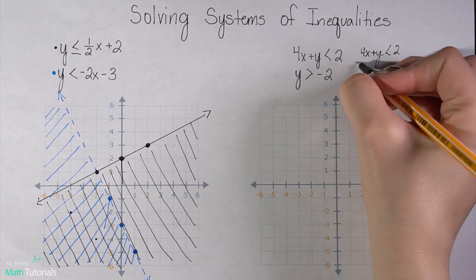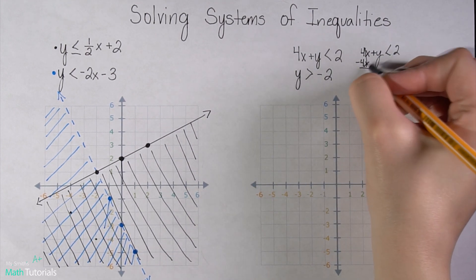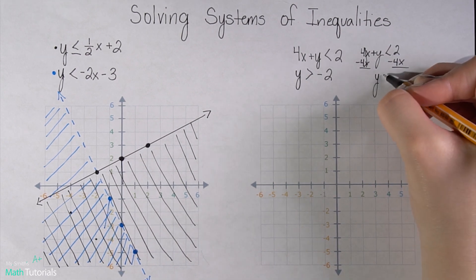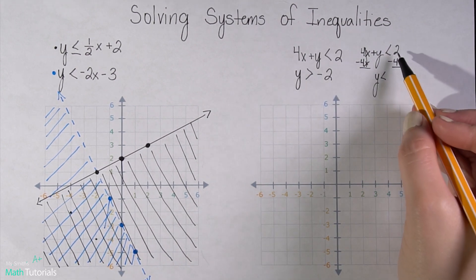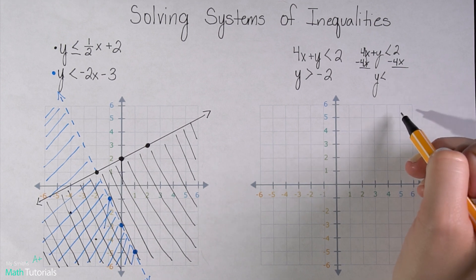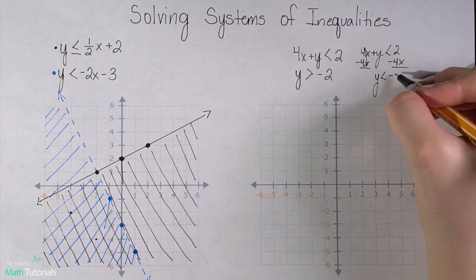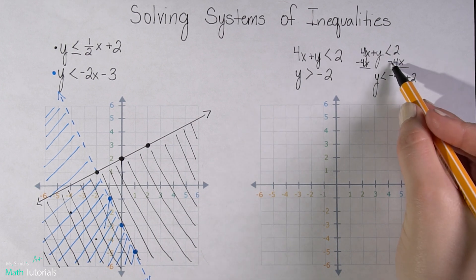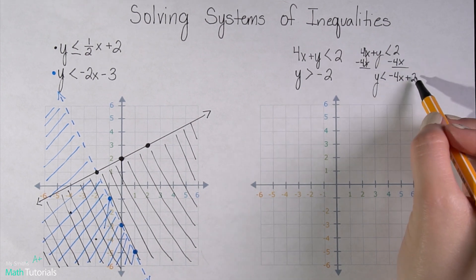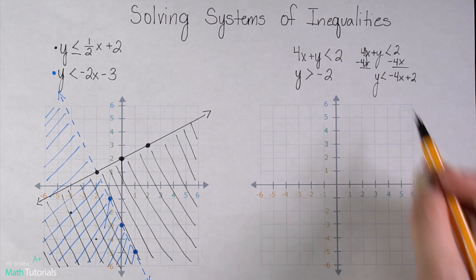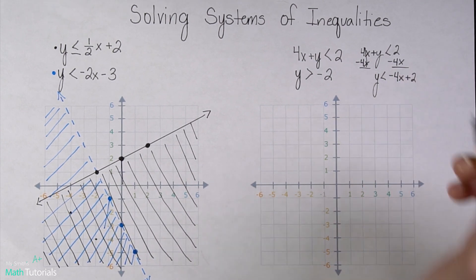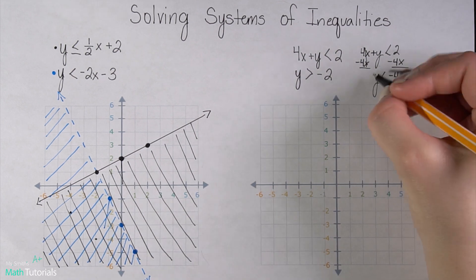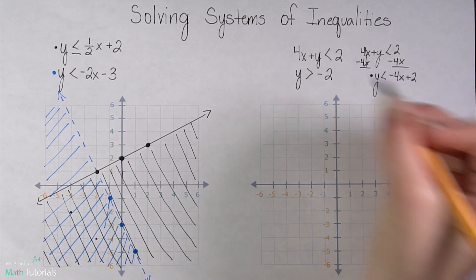So let's get that first one in the right form. So 4x plus y is less than 2. I would want to get my y alone. So I'm going to move this 4x over. I would have y is less than, now I can't combine 2 minus 4x, but I can rewrite them in standard form, keeping their signs. So the negative stays with the 4x, the positive stays with the 2. Now I've got an equation in slope intercept form that I can graph.